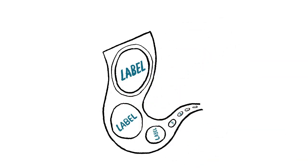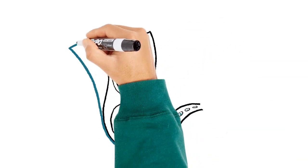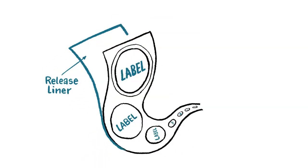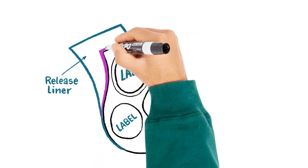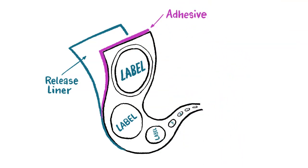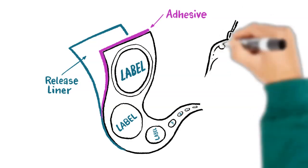A release liner is a crucial element in the making of self-adhesive or pressure-sensitive labels. The liner acts as a protective backing and ensures that the labels don't stick unintentionally but can be processed and transported through the next steps in the label development journey.